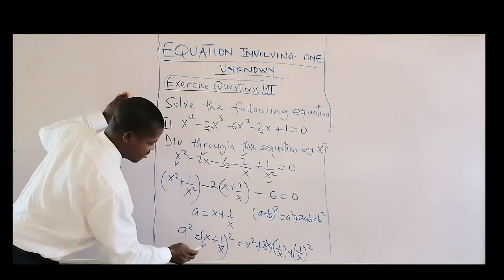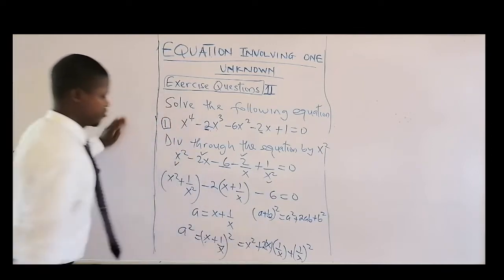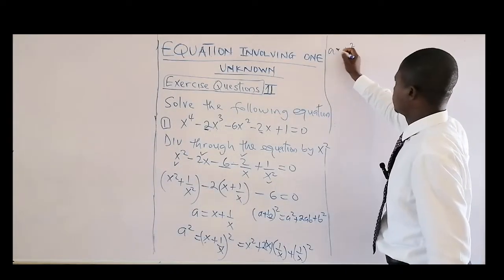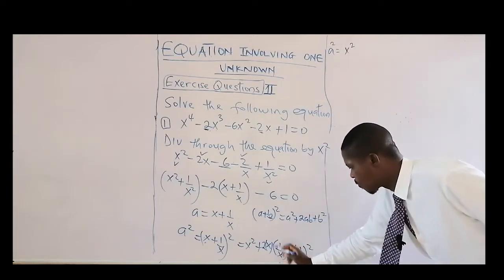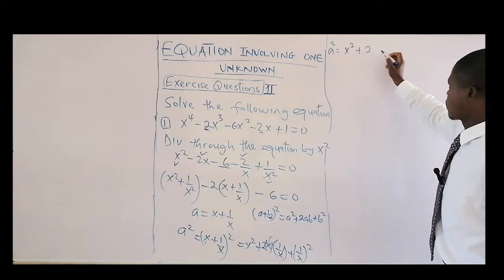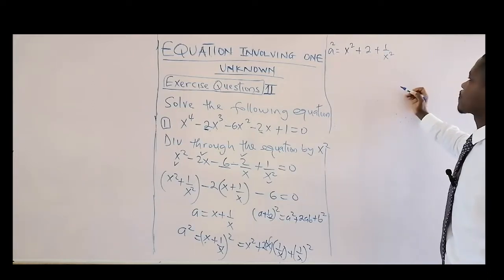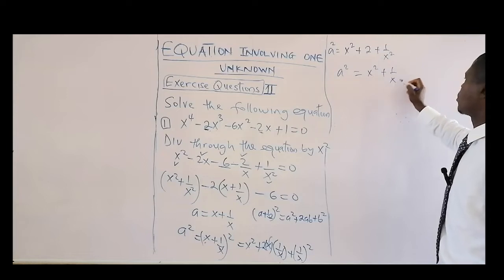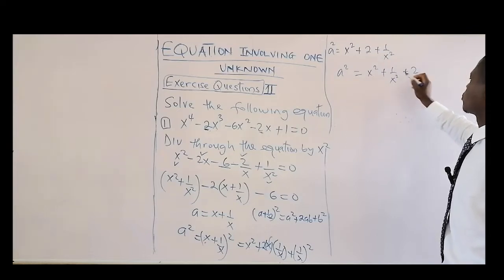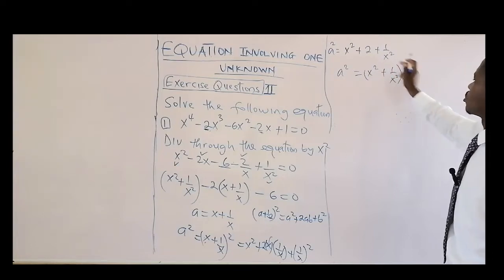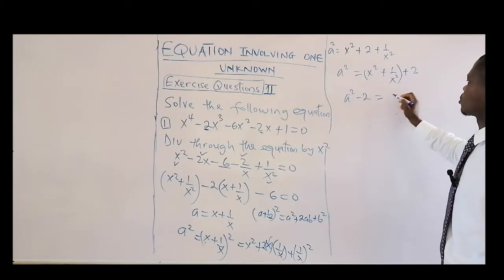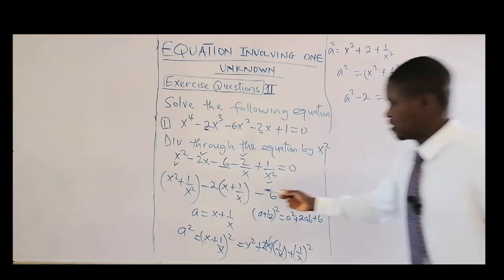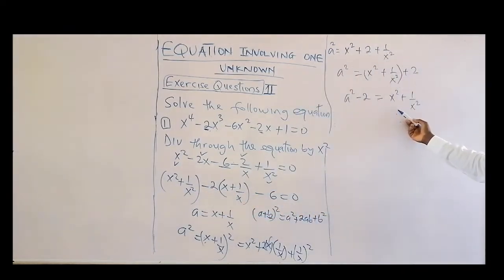So a squared equals x squared plus one over x squared plus two. We can rearrange this: a squared minus two equals x squared plus one over x squared. That is the relationship between the two grouped expressions in our equation.